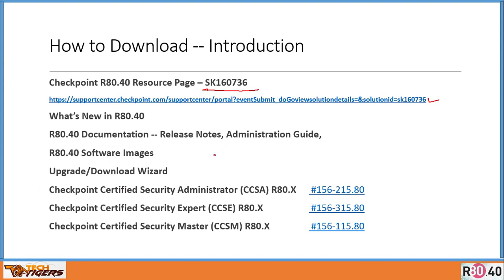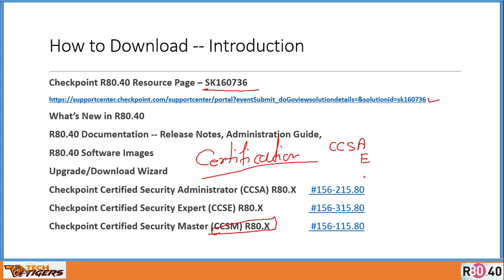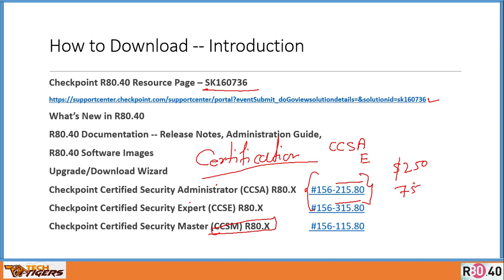The next section of this video is Certification. The most popular certifications in the industry in terms of firewall are CCSA, CCSE, and CCSM. CCSM is a very high-end certification. CCSA stands for Checkpoint Certified Security Administrator, and CCSE stands for Expert. The exam codes are 215 and 315. It will cost you $250, with around 75 multiple-choice questions — they may have some labs as well. These are certifications that network security professionals must have in their profile and CV.